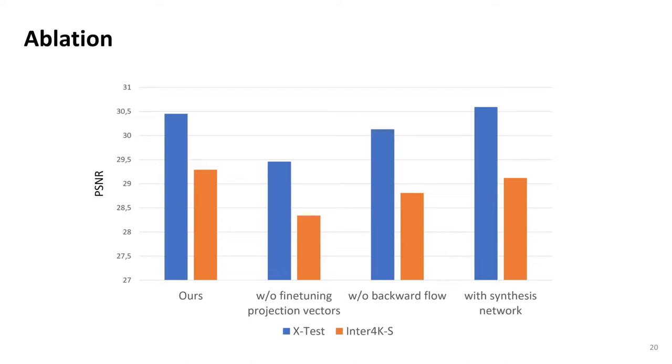Let us now look at the importance of the various components in our overall framework. Without fine-tuning the projection vectors of the linear dimensionality reduction, our model performs far worse. The same applies when we only rely on the forward flow. Both changes lead to a considerable drop in PSNR on both test sets. As stated before, we refrain from using a synthesis network, as it is costly in parameters and memory. That said, including a synthesis network only improves the performance on some test sets.